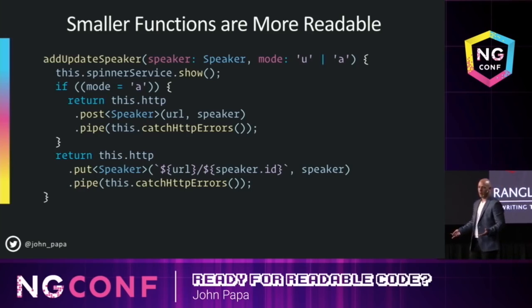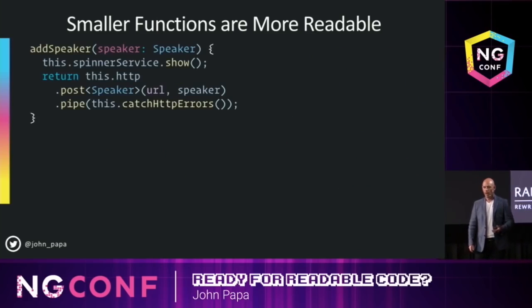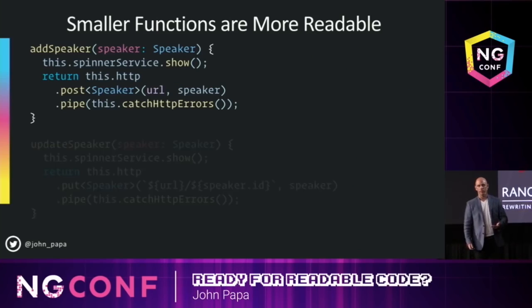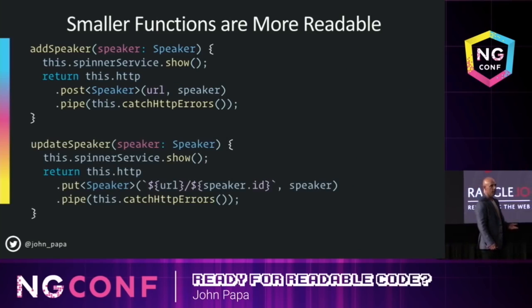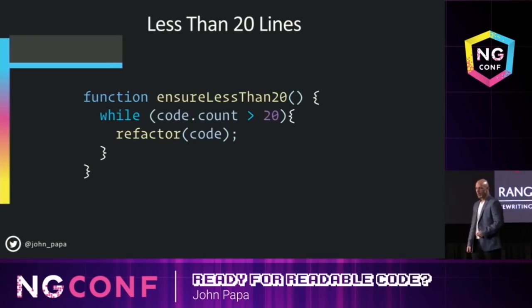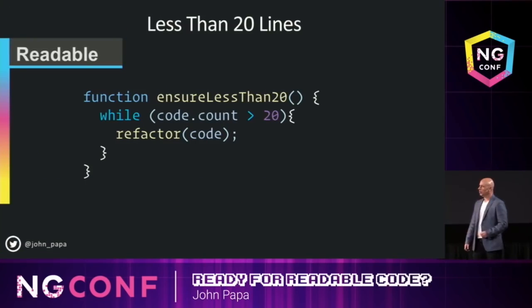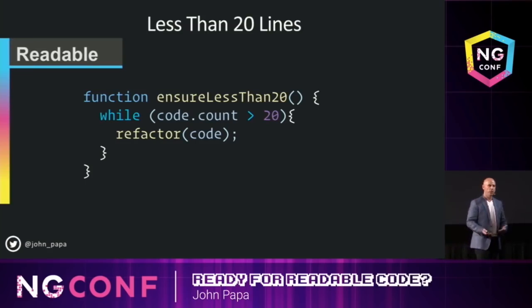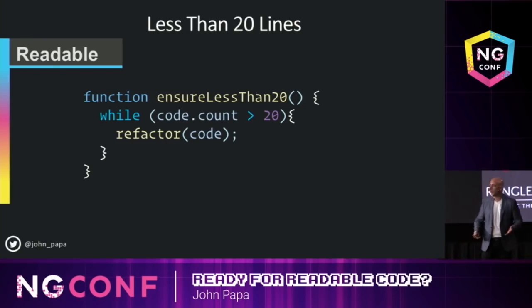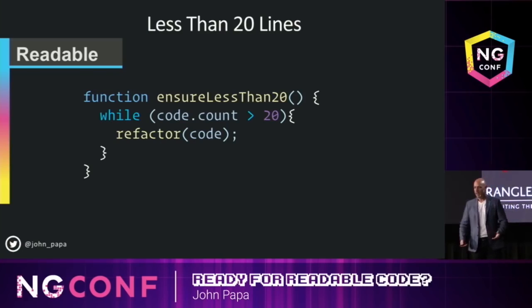This code is arguably not too hard to read, but it could be easier. Why not just have an add speaker function and an update speaker function — something simpler that just calls those? Less than 20 lines is a general guideline I have. It's not hard and fast, but if it's too big — some people say it can't be off screen, some say no more than 10 lines — it's really whatever your guidelines say in your company. It helps you read through the code faster.